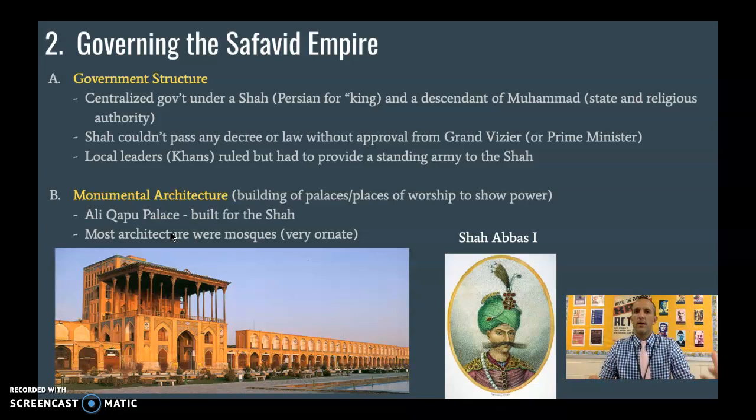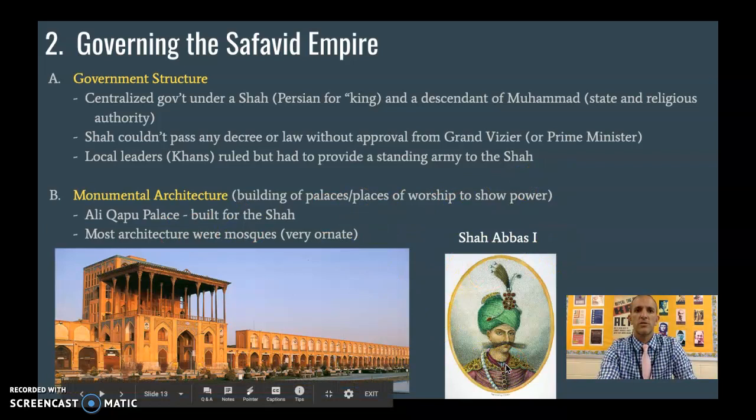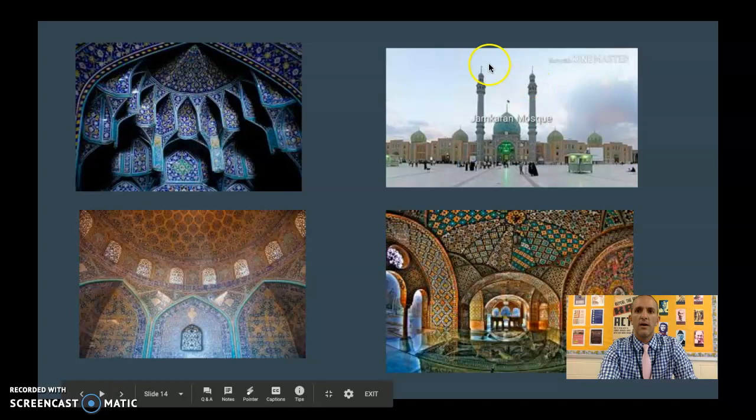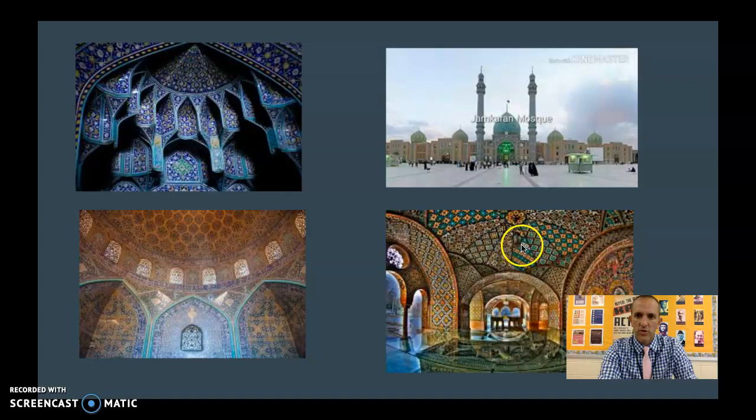One of the main leaders is Shah Abbas I — the first — amazing mustache, just as a side note. Inside some of the mosques you can see the minarets and kind of this arabesque architecture: very intricate geometric pattern, very colorful, very beautiful, very ornate. You can imagine it took a long time to do this, but it shows their power.